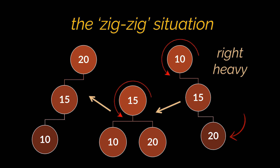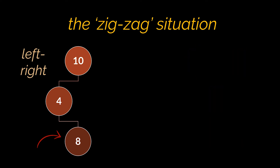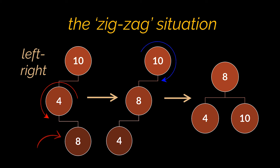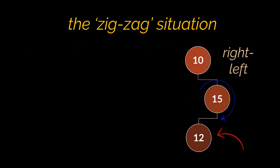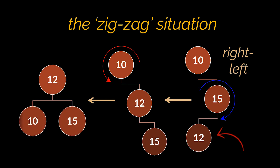The last situation is the zig-zag situation, which also has two cases — the left-right and right-left situations. For the left-right case, to bring node 8 to the top we apply a left rotation on node 4 (its parent), followed by a right rotation on node 10 (its grandparent). Symmetrically, the right-left case requires a right rotation on the parent of the node we're moving up, followed by a left rotation on the new parent, which was the old grandparent.